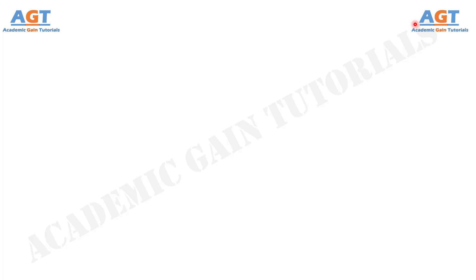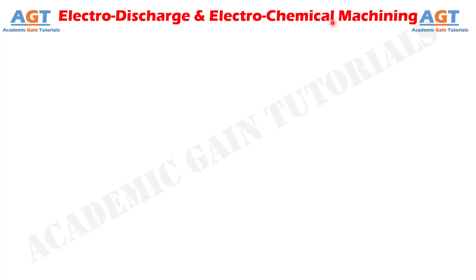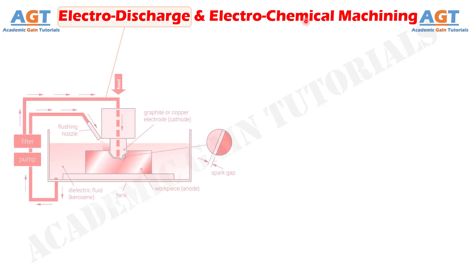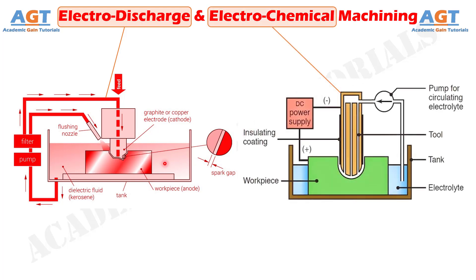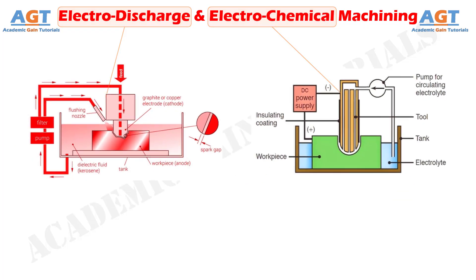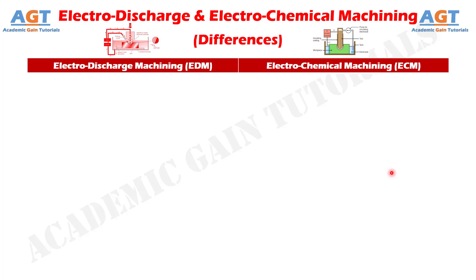Welcome to Academic Gain Tutorials. In this video, we will look into the differences between Electro-Discharge Machining and Electro-Chemical Machining. Electro-Discharge Machining is one thermal energy-based process where material is removed by localized melting and vaporization. Intense heat is generated by means of electric sparks. Electro-Chemical Machining is one electro-chemical energy-based non-traditional machining process where material is removed by ionic dissolution following the principles of Faraday's Law. So, let's look into the basic differences between Electro-Discharge Machining and Electro-Chemical Machining in a tabular form.